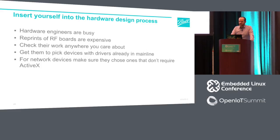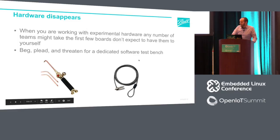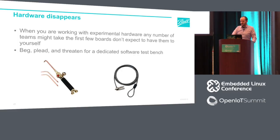My buddy had to write an interface to a $100,000 rack — a 380-volt DC power supply — and all you could control it with was ActiveX. It's extremely painful to get ActiveX support in Linux, and we would have changed parts easily if we'd known, because it cost a ton of time and money. Hardware will also disappear on you, especially expensive RF hardware. The first thing you have to do when starting a project is beg, plead, or threaten for a software test bench. If you don't get that, your hardware engineers, RF engineers, and test engineers will all pull your hardware away from you.